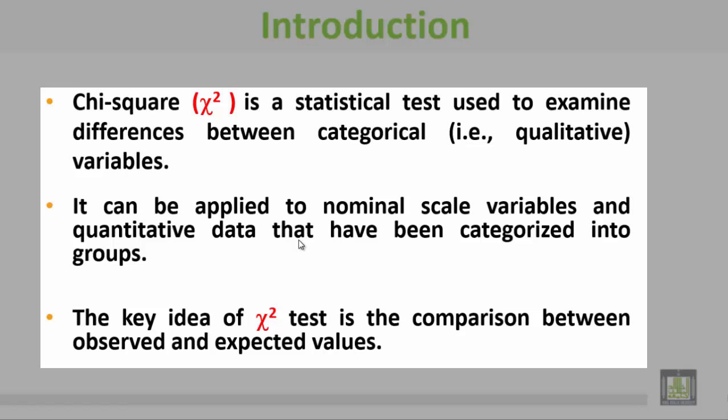Chi-square is used for the comparison between qualitative variables and it can be applied to nominal variables or quantitative variables after dividing them into groups. The basic idea in the chi-square test is the comparison between the observed values and the expected values.